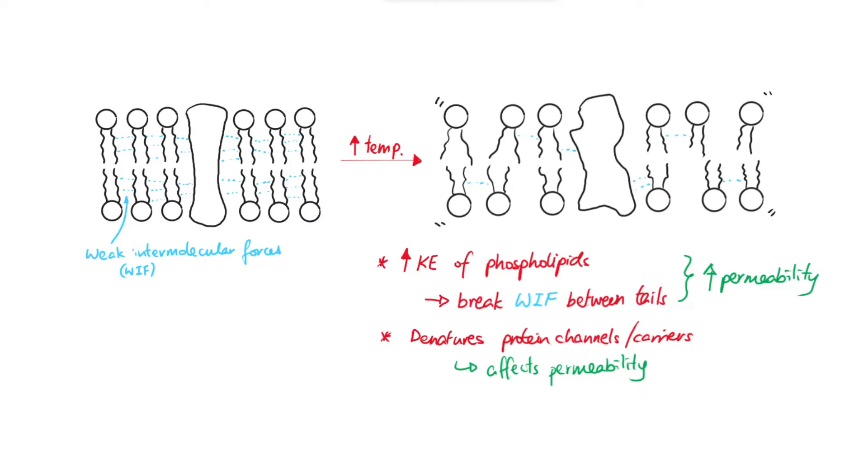Denaturation of protein carriers or channels would affect permeability — it could go either way, increasing or decreasing it, depending on how those proteins were working. Apart from that, looking at just the phospholipid bilayer, because the phospholipids are further away from one another the gaps between them are bigger, so simple diffusion may happen more readily. Generally speaking, increasing temperature increases the permeability because of the larger gaps between the phospholipids.